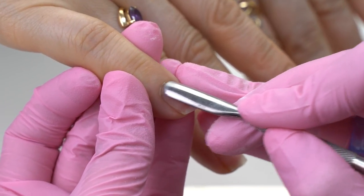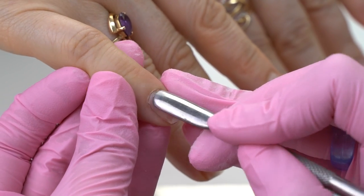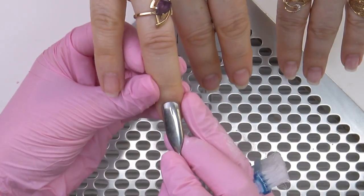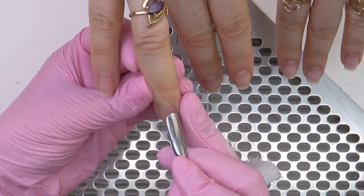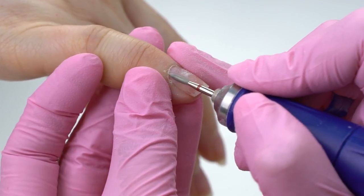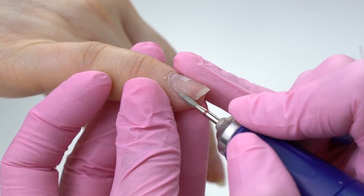I push the cuticle with a pusher, so that I could easily get there with the drill bit later. I'm using a red flame drill bit, 0.21 in diameter. Forward position. The speed is 15 to 17 thousand RPM.